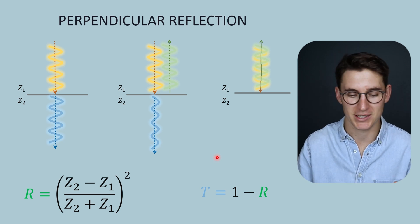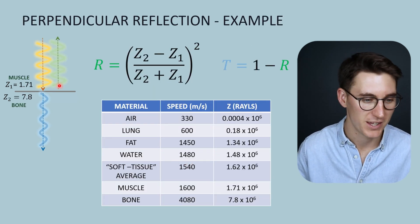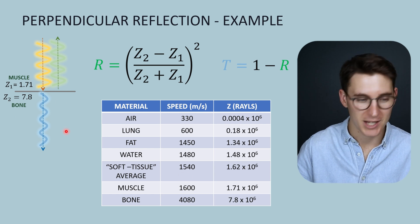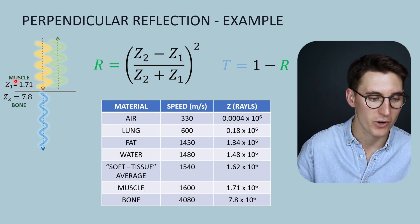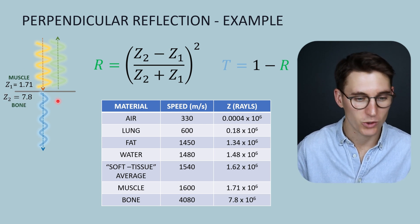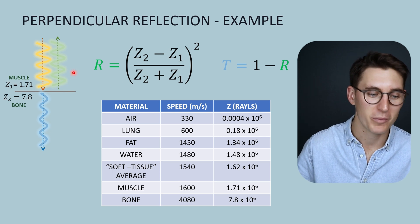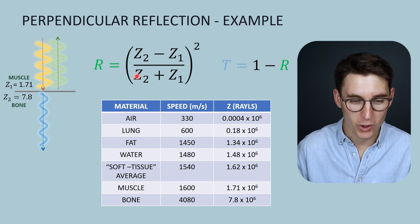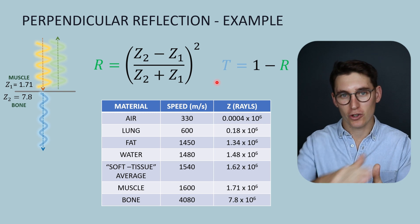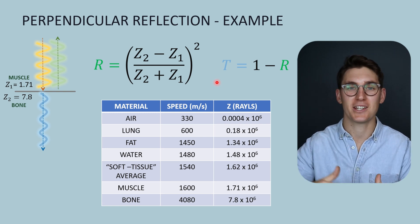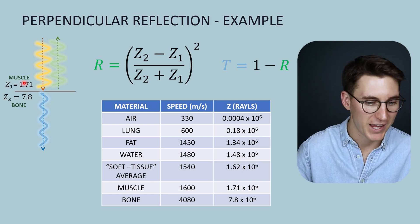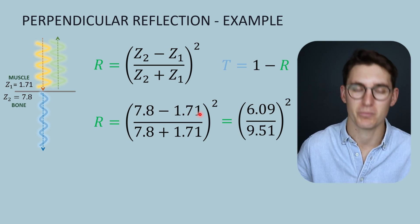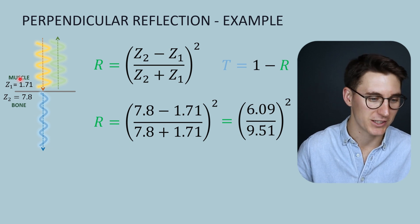This is a common exam question, so let's work through an example. An incident ultrasound beam reaches a tissue boundary between muscle and bone. From the table, the acoustic impedance of muscle is 1.71 rayl and bone is 7.8 rayl. We use the reflectance formula: the acoustic impedance of bone minus that of muscle, divided by the sum of the two acoustic impedances. It's important to note these equations only work for perpendicular reflection — large smooth tissue boundaries perpendicular to our ultrasound probe.